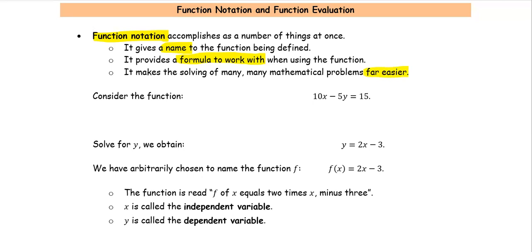For example, let's consider the function 10x minus 5y equals 15 and we're going to solve for y as a general process. We leave the negative 5y on the left and subtract both sides by 10x to get negative 5y equals negative 10x plus 15, then divide both sides by negative 5.